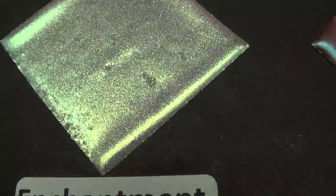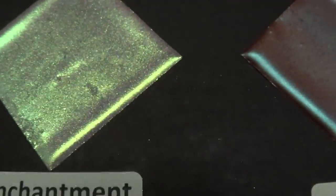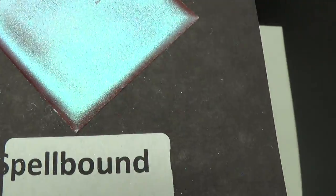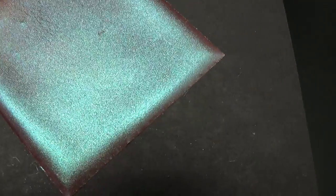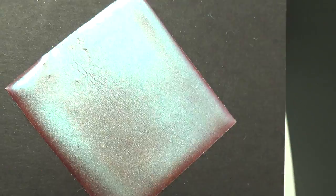Then Enchantment, which is more of a greenish gold color—you can see the greenish part. And then Spellbound, which has blue with burgundy background.